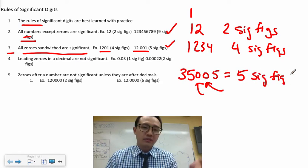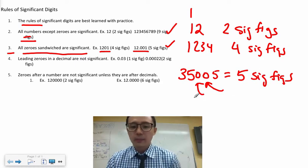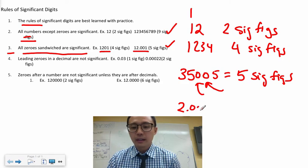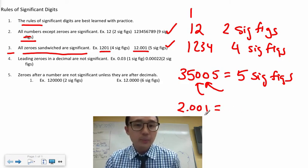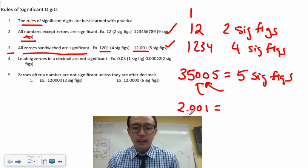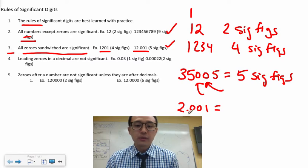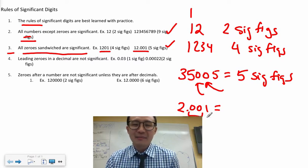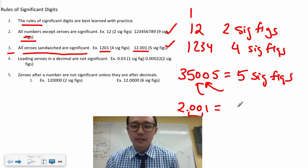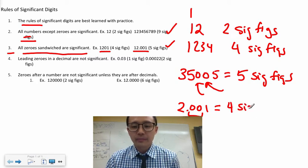Another example: '2.001' — even though we have a decimal place here, these two zeros are sandwiched between the 2 and the 1, so they are still significant. That gives us four sig figs.